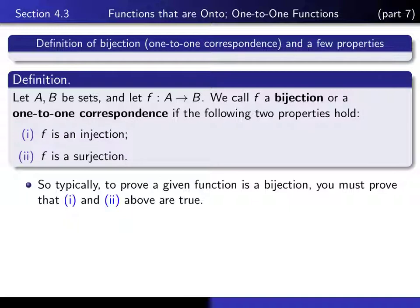So if your intention is to prove that a given function is a bijection, you would have to show these two properties: you'd have to show that it's an injection and it's a surjection. Normally speaking, you would have to apply the working definitions of injection and surjection to that function and prove that they are true.